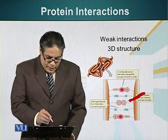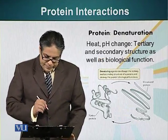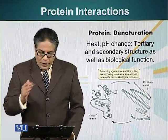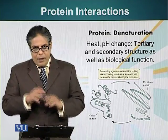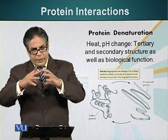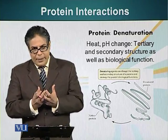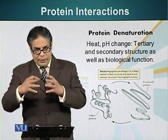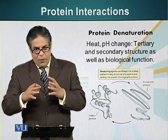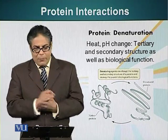Let's look at protein denaturation. Protein three-dimensional shape is based on the chemistry of different R groups within that protein.